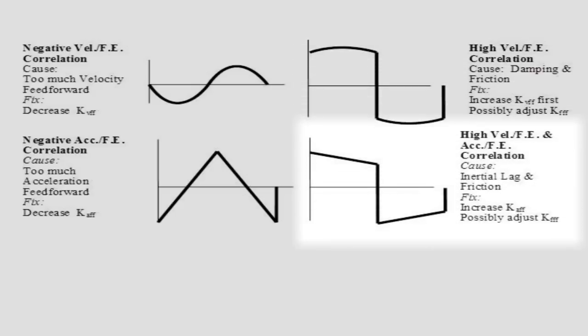The bottom right corner is a mixed case caused by the combination of inertial lag and friction. To compensate for it, first increase kAFF until the ramped portions on the left and right halves of the curve come down and become flat spots of equal magnitude but opposite in sign. Then, increase kFFF until the flat spots come to zero.